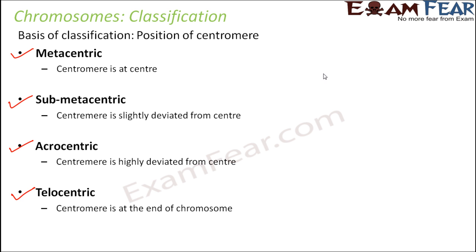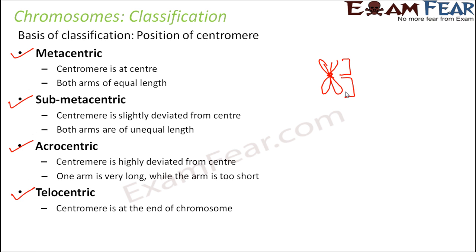In metacentric chromosomes, the centromere is located at the center, so both arms are of equal length. In submetacentric chromosomes, the centromere is slightly deviated from the center, so one arm is short while the other is long - they are of unequal length.